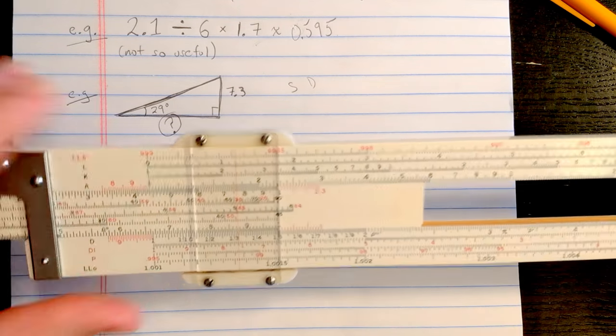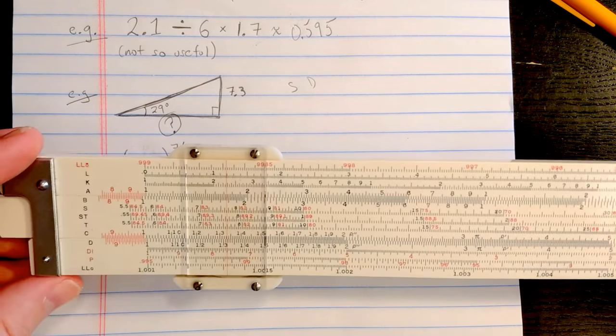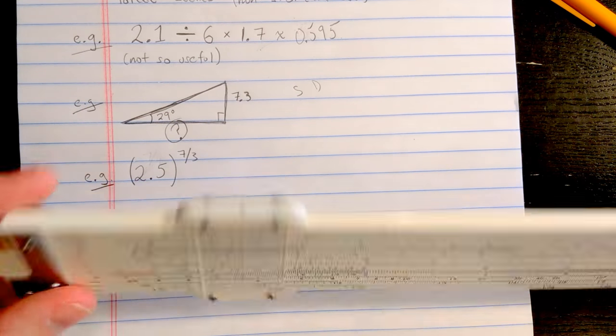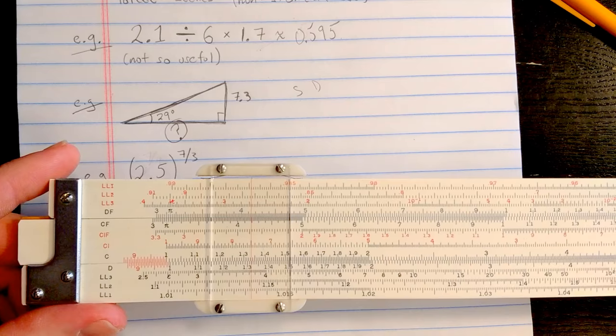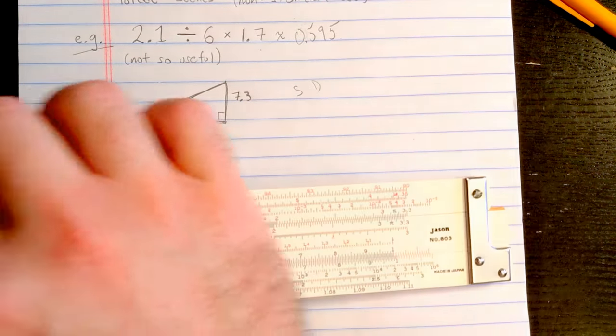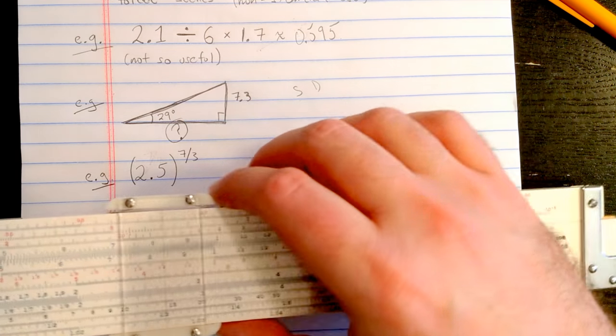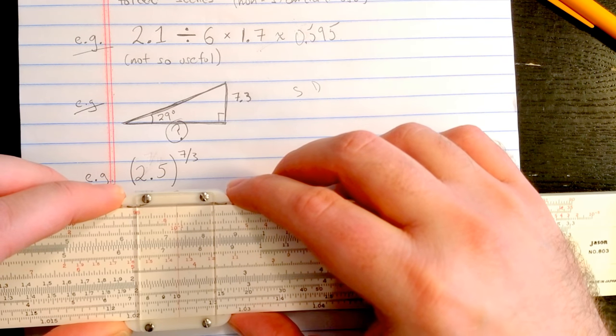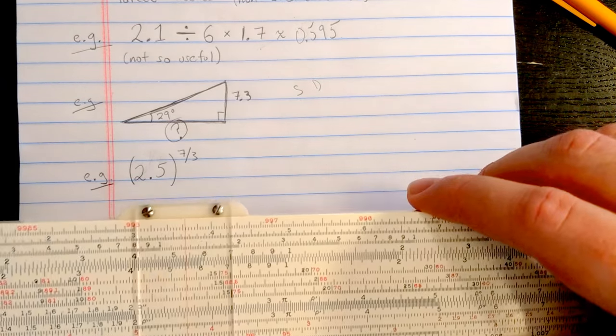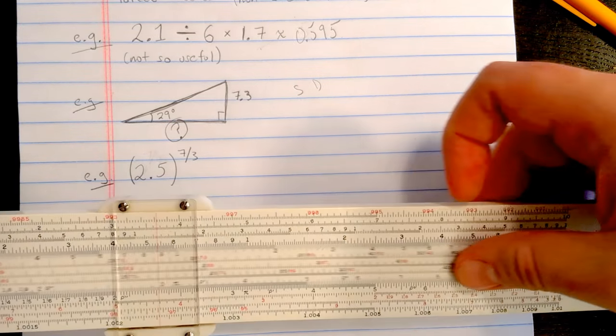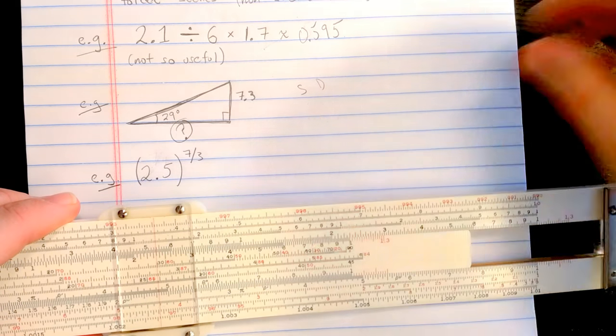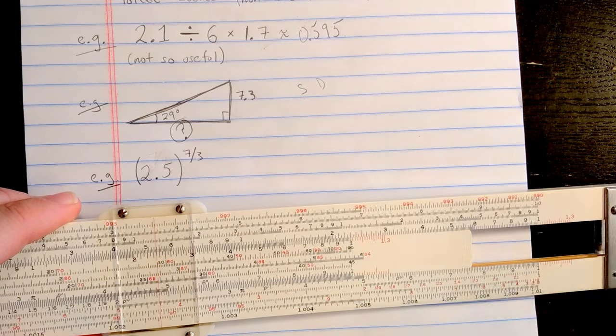Now instead, let me propose the following solution. You use the S scale and you use the DF scale. Okay, so this is going to involve both sides. So what I'll first do is find the 7.3 on the DF scale instead of the D scale. Okay, right here. Then I'll flip. I'll find the 29 degrees on S here.